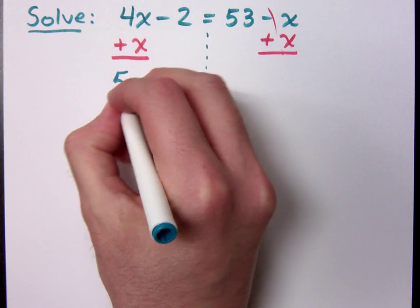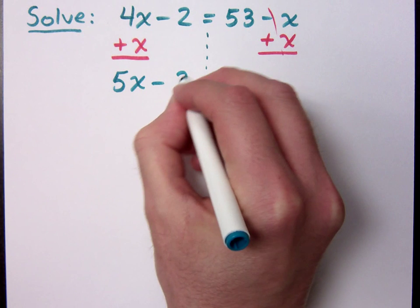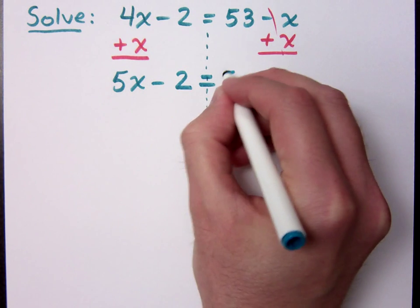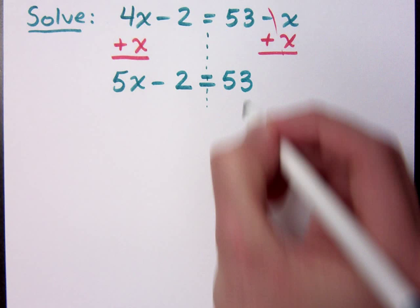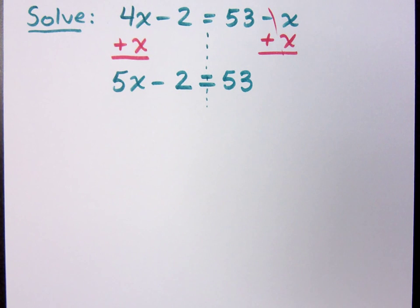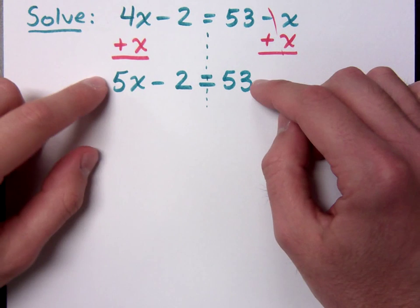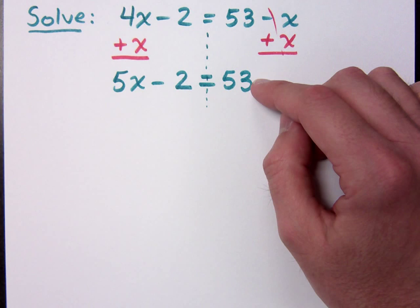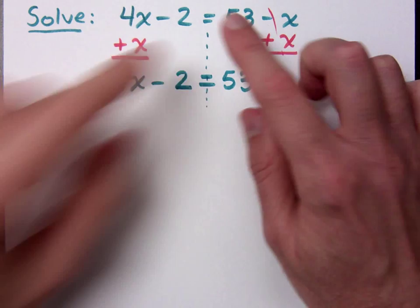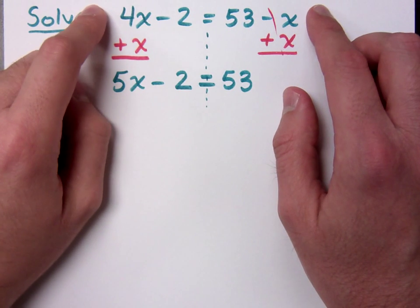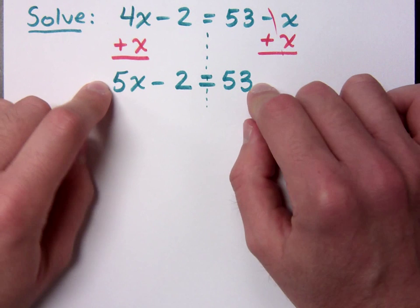So now I have 5x minus 2 is equal to 53. Wait, did I do something wrong? No, you add 2 into 53. Right, so what you see now is that this guy looks just like the problems that we just had. So it was more complicated than the last ones, but after the first step, then it's what we know.